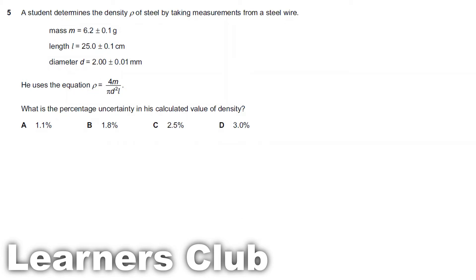We can write the percentage or fractional uncertainty this way. Since it's a combination of multiplication and division, you should know the combination of multiplication and division. The uncertainty can be shown as the sum of the fractional uncertainties.